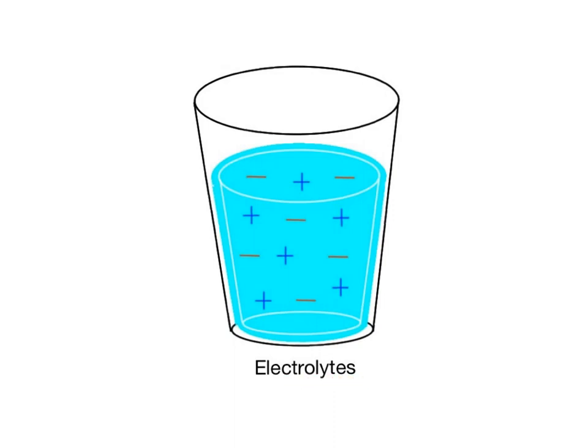Electrolytes are solutes that dissolve and ionize in solution, forming positive cations and negative anions. As a result of these charge differences, they are able to conduct an electric current. Some examples of strong electrolytes that ionize completely in solution include salts such as sodium chloride and potassium chloride, strong acids like HCl, hydrochloric acid, and strong bases such as NaOH, which is sodium hydroxide.